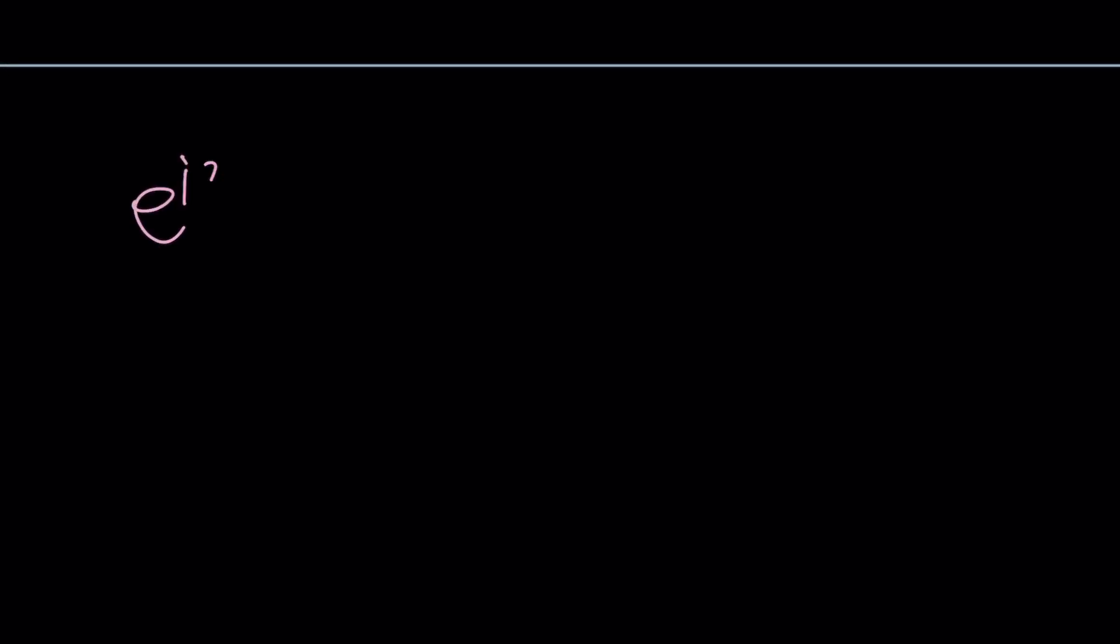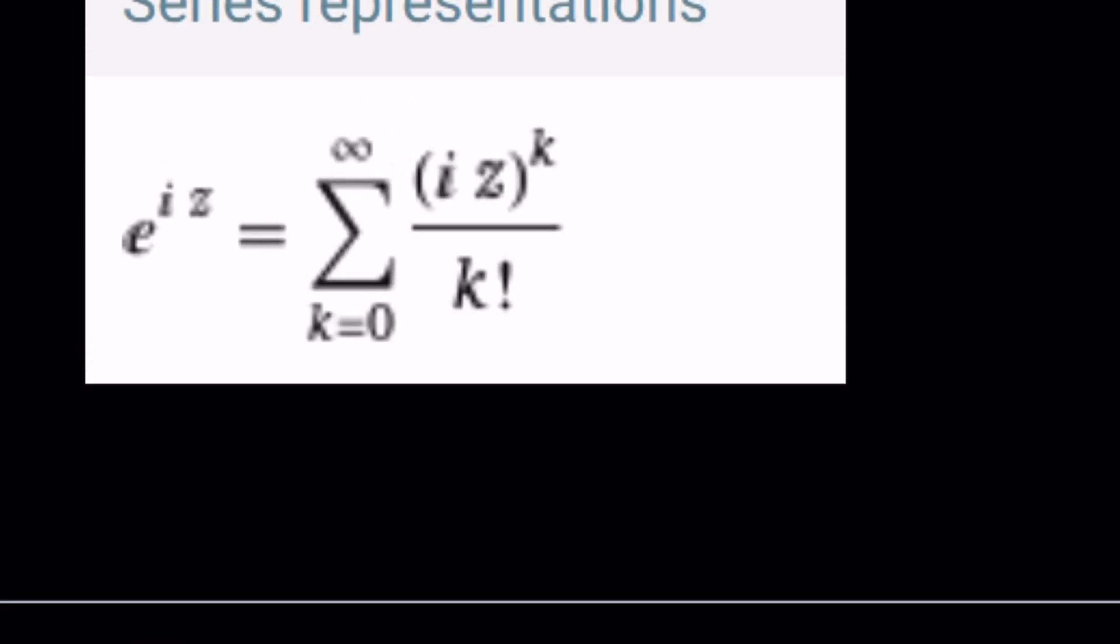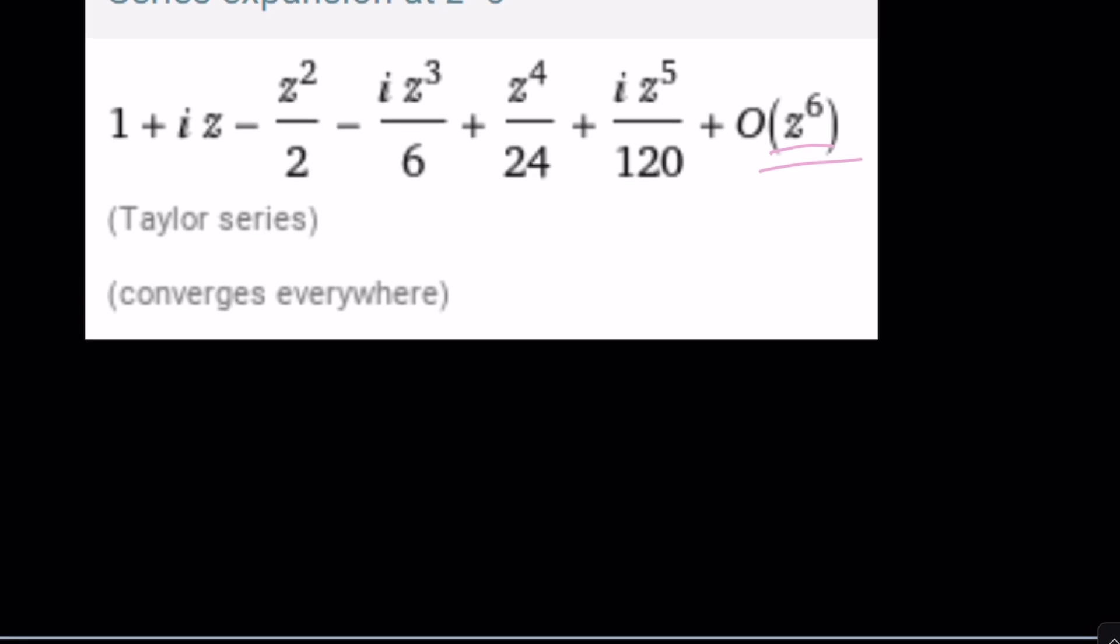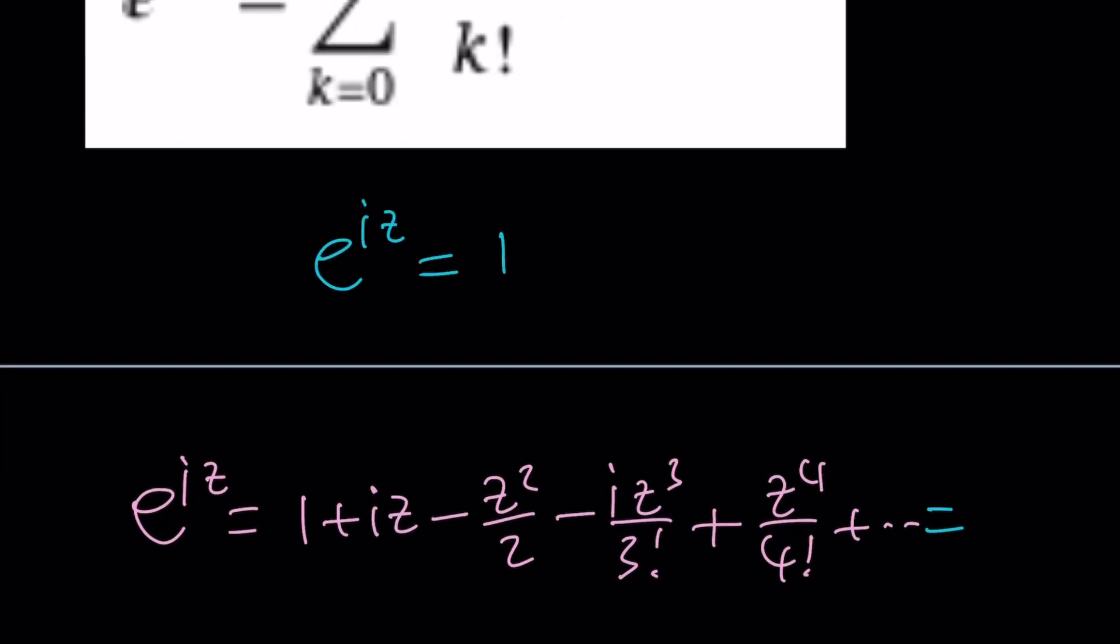E to the iz equals 1 plus iz, and then I have iz squared divided by 2 factorial which is negative. Negative z squared over 2 factorial and then minus iz cubed over 3 factorial and now we're going to have the z to the fourth power so on and so forth. I do need to set this equal to 1 plus iz. So this whole thing is equal to 1 plus iz. Let's go ahead and set it equal to 1 plus iz.